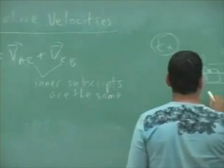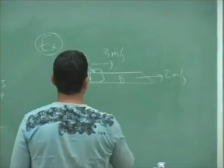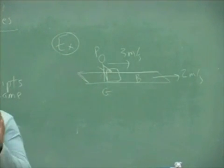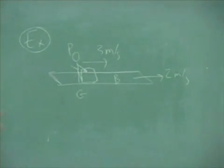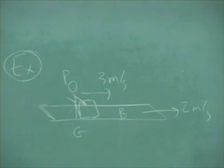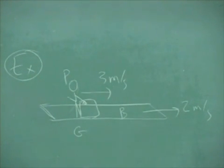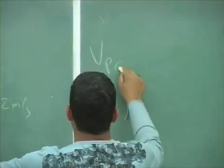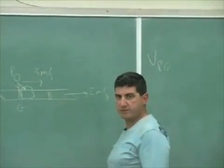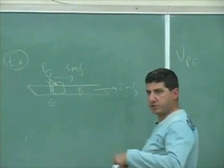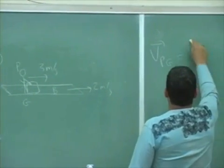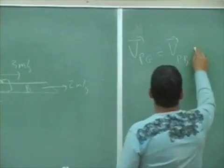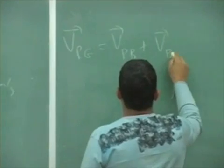The way we can write this is, call the belt B, call the person P, call the ground G. Those are what's called reference frames. The person is one reference frame, the belt is another reference frame, the ground is another reference frame. The velocity of person B with respect to the ground is what we're interested in. That's equal to the velocity of person B with respect to the belt, plus the velocity of the belt with respect to the ground.